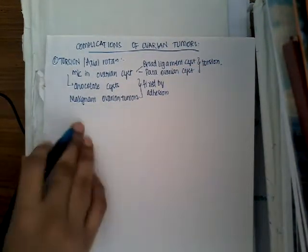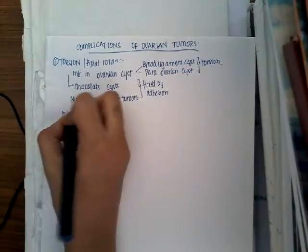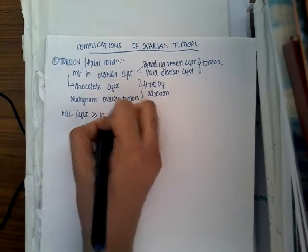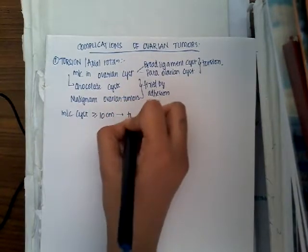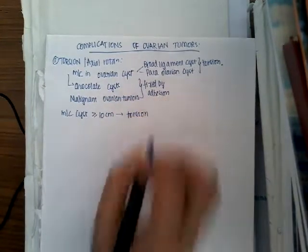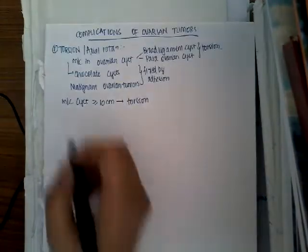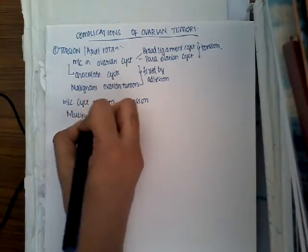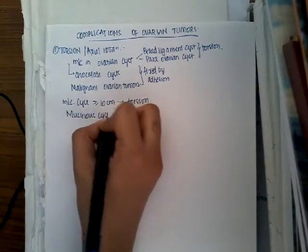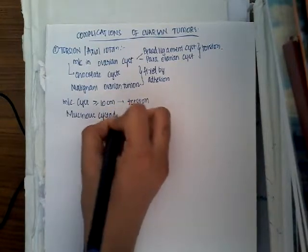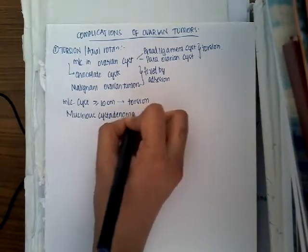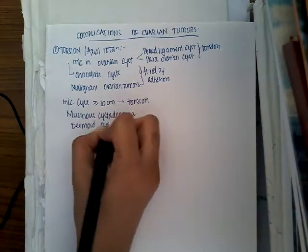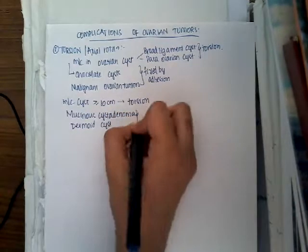Cysts which are greater than or equal to 10 centimeters undergo torsion. The tumors which most commonly undergo torsion include mucinous cystadenoma and dermoid cysts.